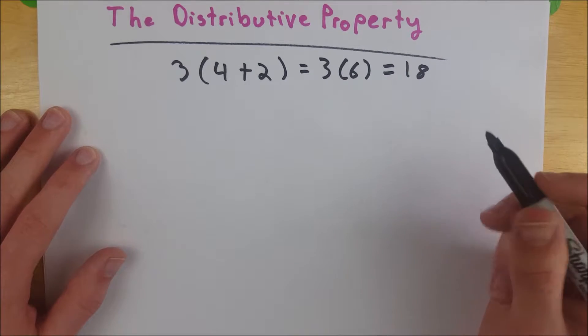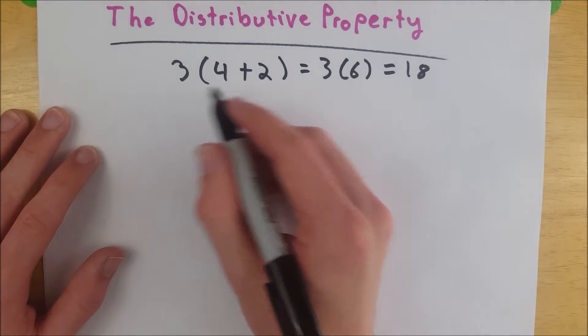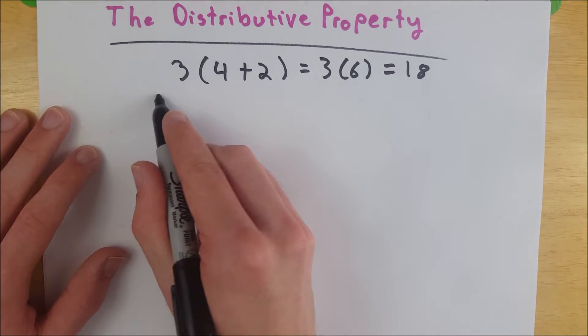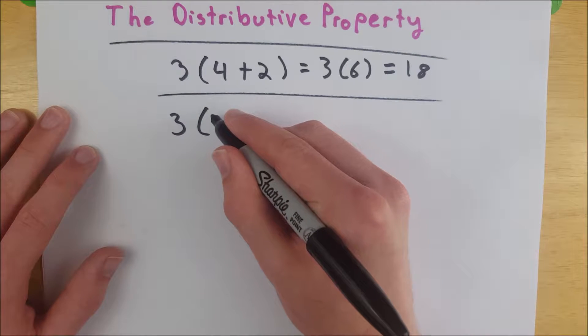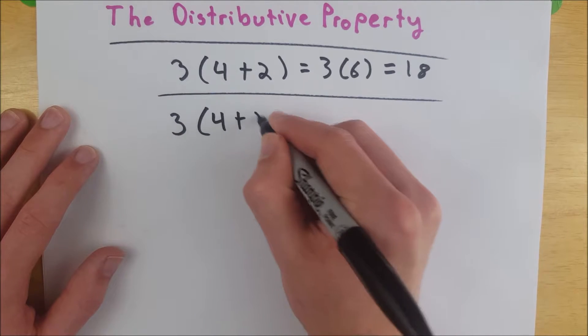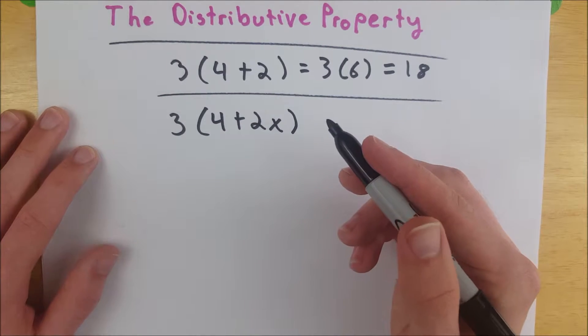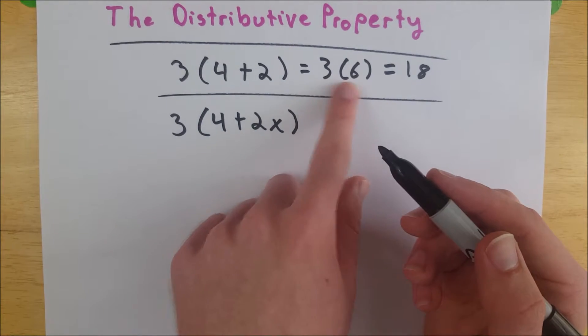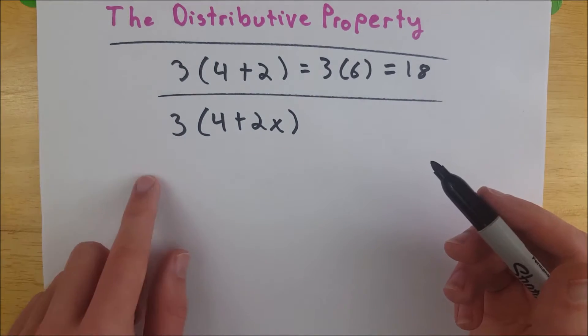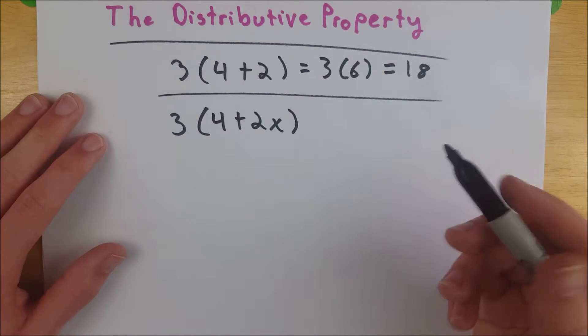That's all fine and dandy, but what if we can't add what is inside of the parentheses? What if they're not like terms? What if we're looking at something like 3 multiplied by 4 plus 2x? Now we've got a variable in the mix and we can't just simply add 4 and 2x to get a number like 6 and multiply 3.